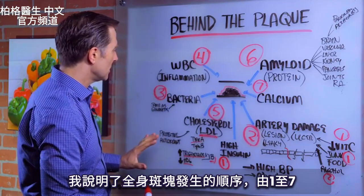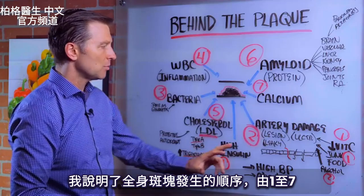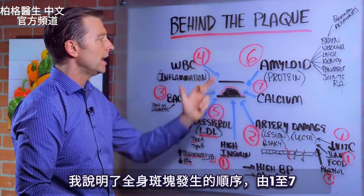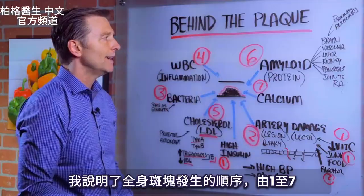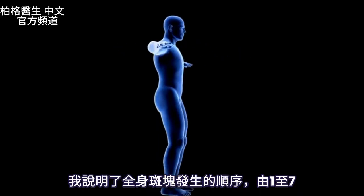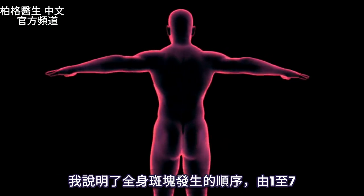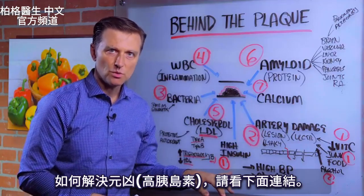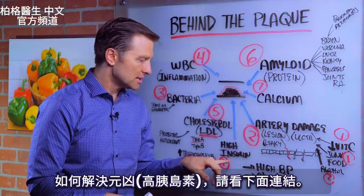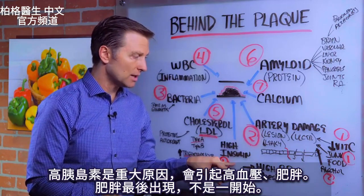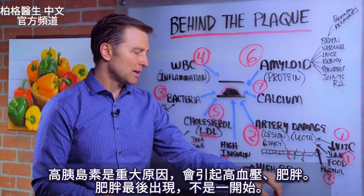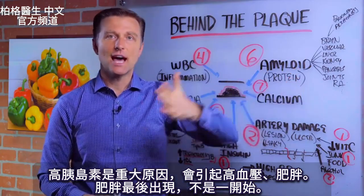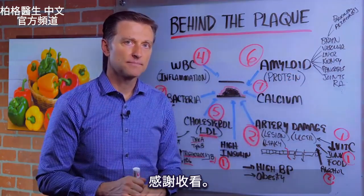So I just wanted to show you the sequence of events — steps one through seven — that's really the order of things that occur, and it's happening all over your body. High insulin is the big culprit, and it will also cause high blood pressure and obesity. But obesity is the last thing to occur, not the first. Thanks for watching.